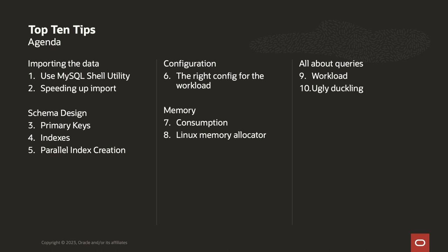Memory consumption — we're going to talk about that. We're going to talk about an alternative Linux memory allocator you can use that will greatly improve your performance and reduce the amount of memory used as we run on Linux. We'll talk about looking at your workload, determining how many reads, how many writes, what's my ratio, how should I set up. And then the ugly duckling, as Lafred named it — that's what's your worst, and let's go fix that. Then rinse and repeat.